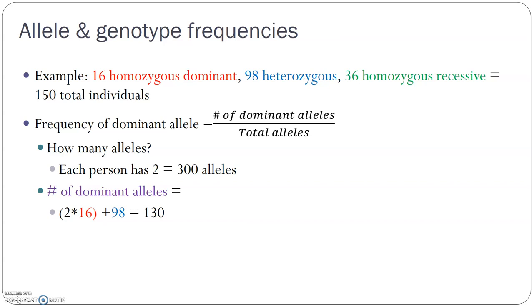To find the frequency, we divide 130 by 300, which gives us a frequency of 0.43, or 43%. So 43% of the alleles in this population are dominant.